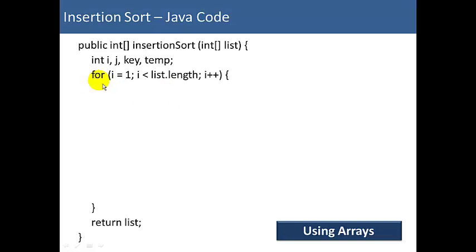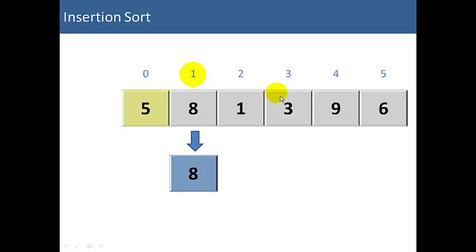Our outer loop, we'll use a for loop. i is going to start at 1 because the very first element, element 0, is already sorted. So we'll start at 1 and we'll go up to less than the length of the list. And then for the other variables. So this is our i, which is from 1 to the end of the list.